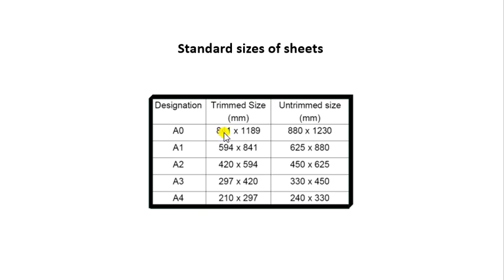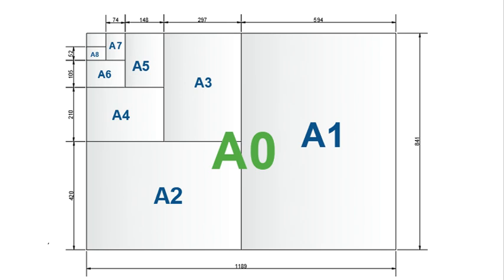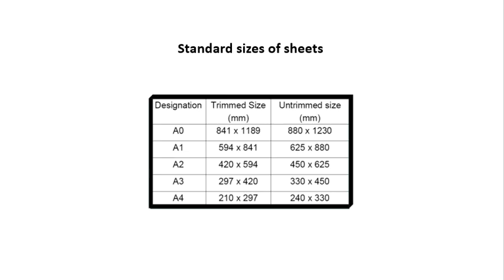The standard sheet sizes are in millimetres. The A0 size is 841 by 1189mm. Exactly half of A0 is A1, half of A1 is A2, half of A2 is A3, and half of A3 is A4. You are familiar with the A4 size paper, which we generally use for writing or as notebook paper. These are the standard sizes.